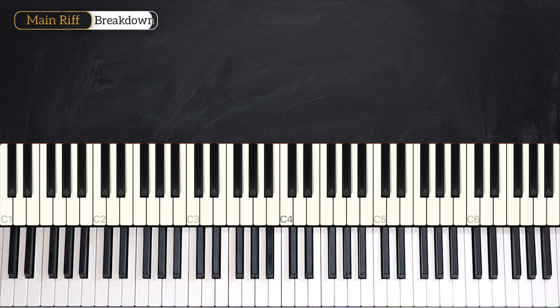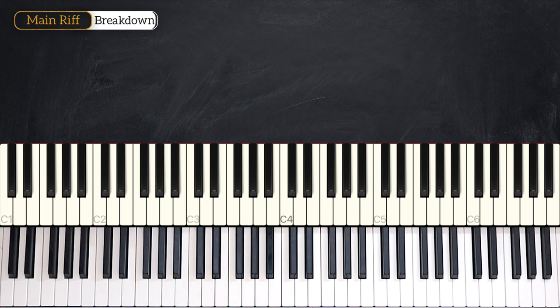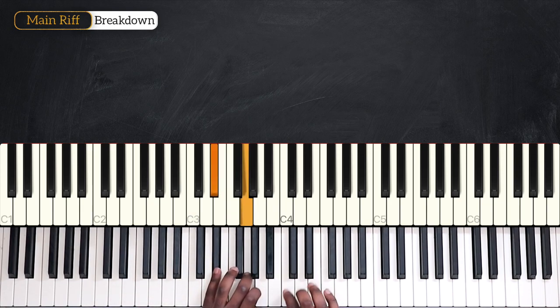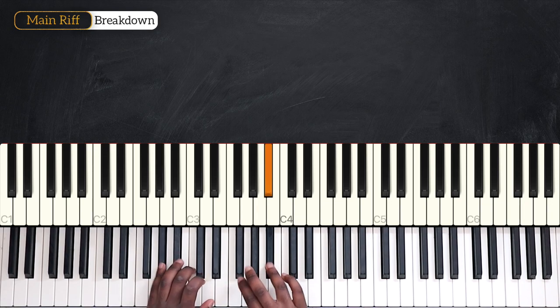And from here you only have to repeat. The same thing for Eb, A, Db, and Ab. Four, five, six. A little bit faster now. Four, five, six. Four, five, six.